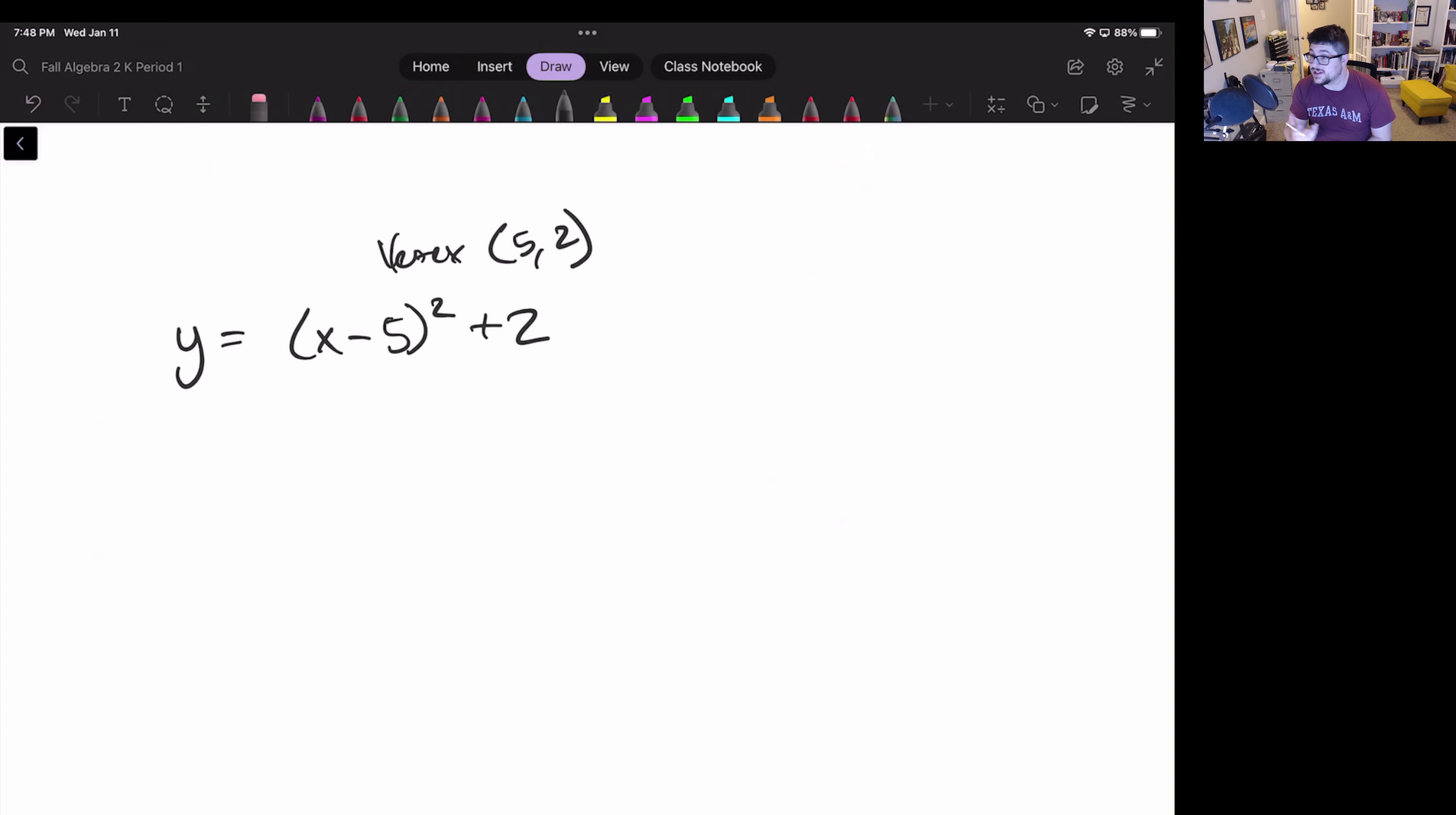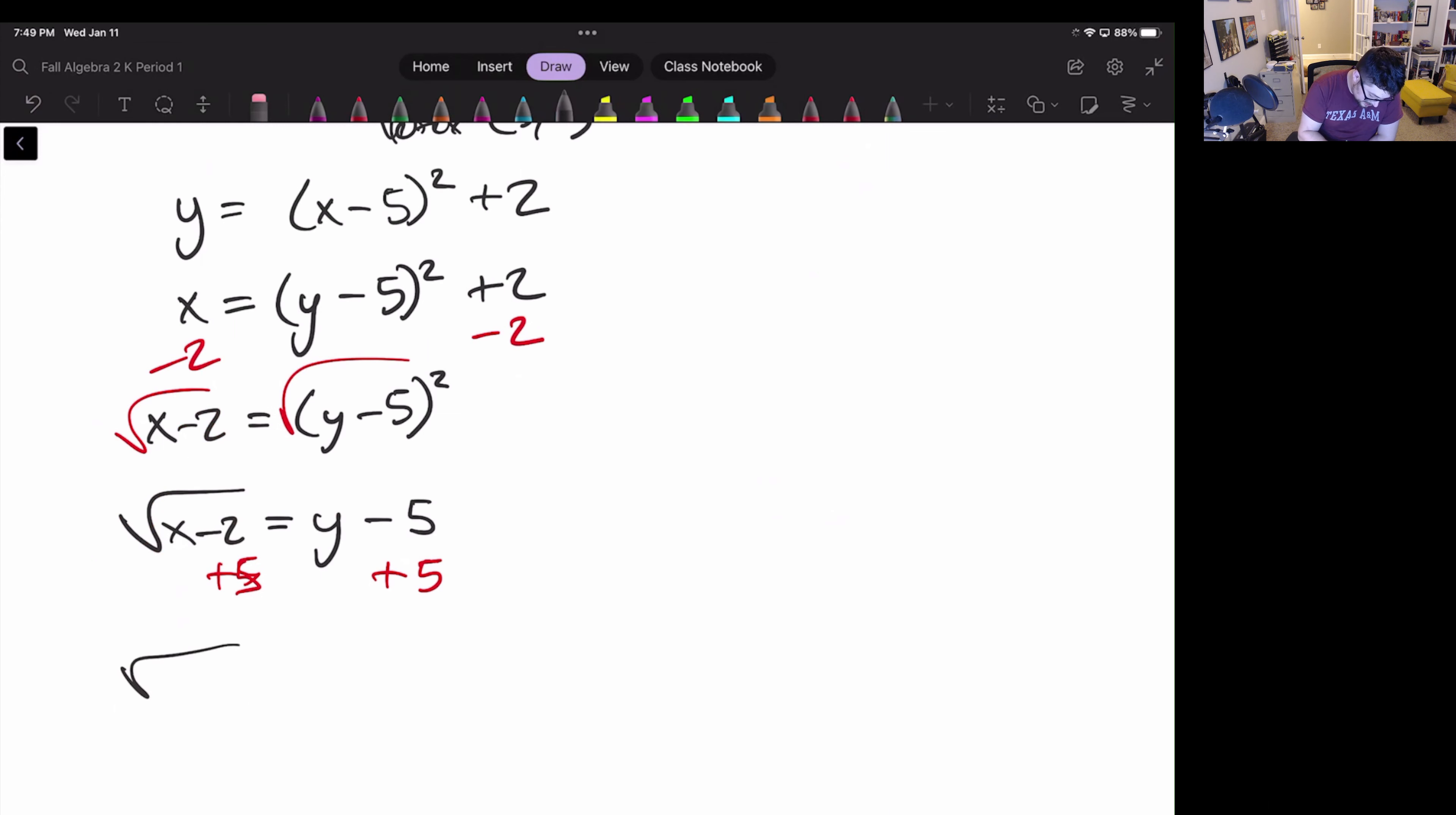So let's inverse this. Let's find an inverse for this. If we did that we'd start by switching x and y. We would subtract two on both sides so we'd have x minus two equals y minus five squared. We would take a square root of both sides so we'd have square root of x minus two equals y minus five and then we would add five to both sides. Now to be clear we're not going to combine that two and that five that two's under a square root so we can't combine those. So we'll keep this as square root x minus two plus five equals y with the five not being under the square root.